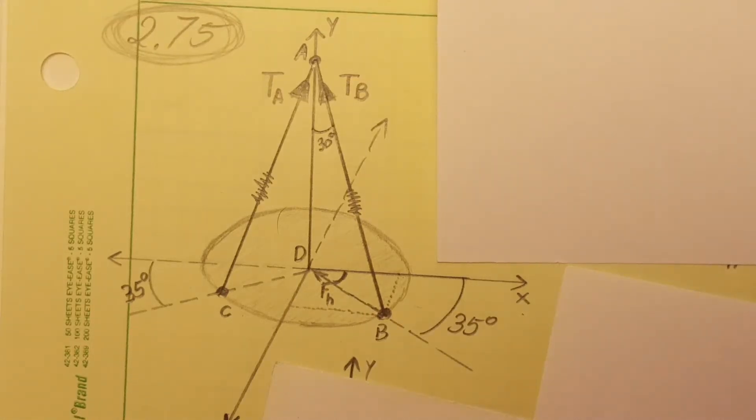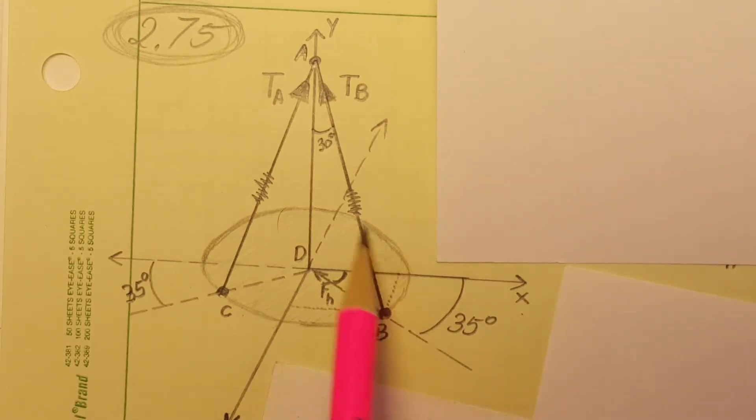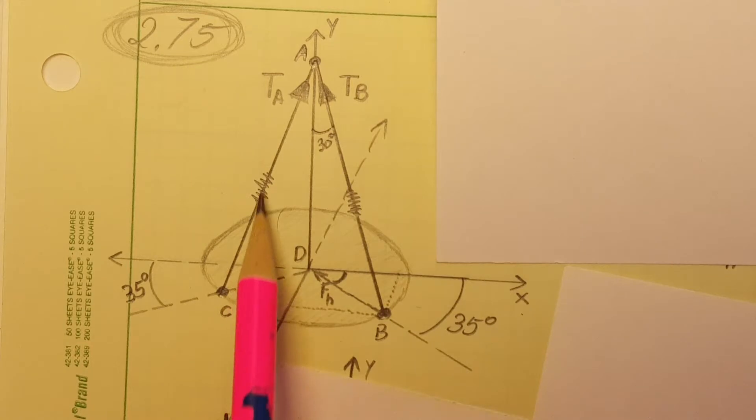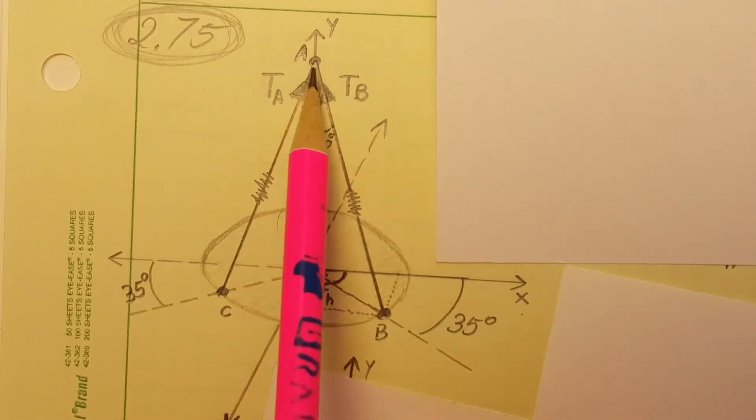In this problem we're going to be doing some calculations with three-dimensional vectors. Here we have a disk with springs attached to it that are connected up here and another one up here.